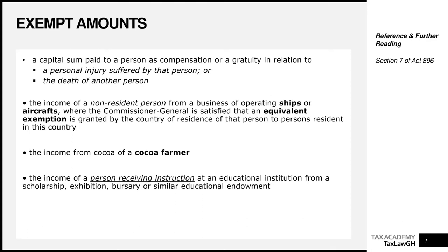The next is a capital sum paid to a person as compensation or a gratuity in relation to a personal injury suffered by that person, or for the death of another person — it's exempt. The payment made was made under conditions of stress and unfavorable circumstances. We use tax not as a tool to punish but as a tool to ensure a fair and just society. So we exempt amounts paid to persons if it is paid because they were injured or because someone died.